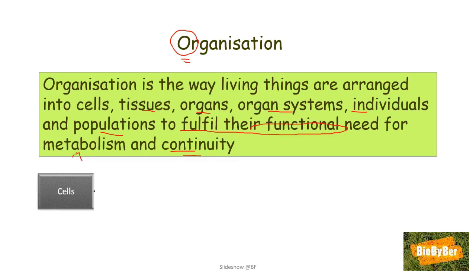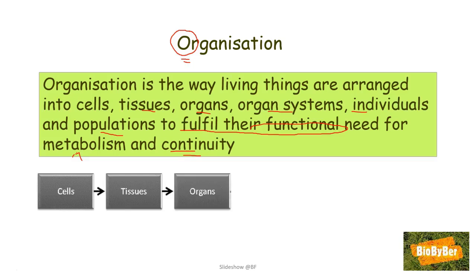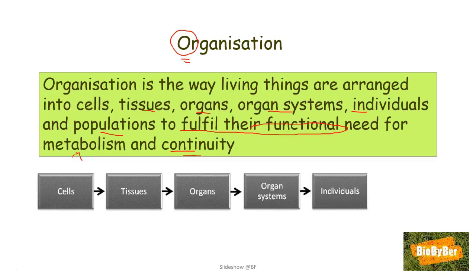Some organisms like bacteria and the amoeba are single-celled or unicellular, whereas most organisms are multicellular. Cells contain all the chemicals needed for life. Cells are organized into tissues, tissues into organs, organs into organ systems, and a group of systems forms an individual.